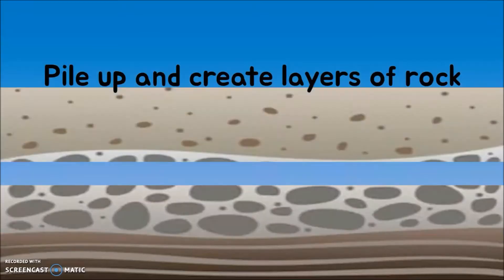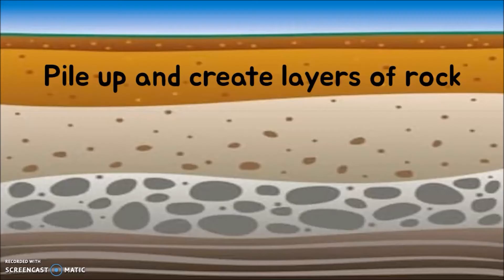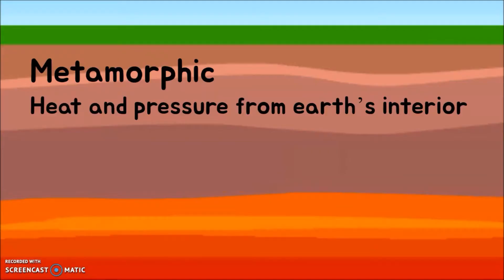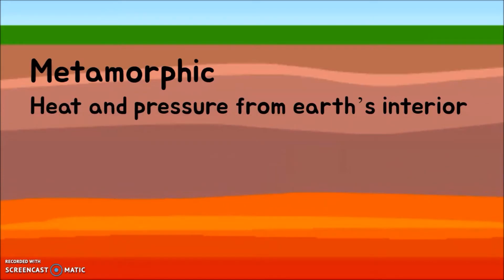When sedimentary rocks form, they pile up and create layers of rock. Once these layers build up, they begin to put tremendous pressure on each other. This pressure, combined with heat from Earth's interior, is going to change these rocks into metamorphic rocks.